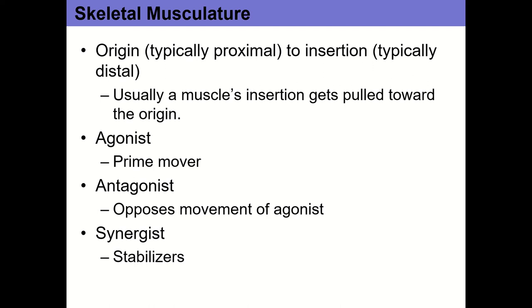For example with biceps brachii, aka your biceps, remember the biceps has two origins. There's one on the coracoid process and the other is on the supraglenoid tubercle, just above the socket for your shoulder. Those two heads run together, so those origins are proximal — they're close to the body because they start there on the scapula, both of them. Then those two origins form a common belly and then a common tendon of insertion into the tuberosity of the radius.